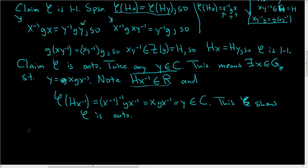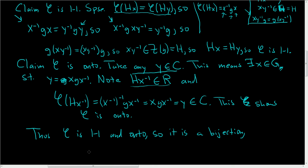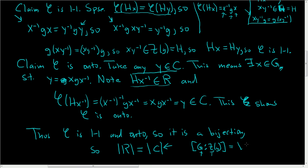Phi is one-to-one and onto, so it is a bijection. Therefore the cardinality of R equals the cardinality of C — the number of conjugates of g in G equals the number of right cosets of H in G, which is the index of the centralizer of g in G. This is a useful result that we'll use later to prove the class equation.